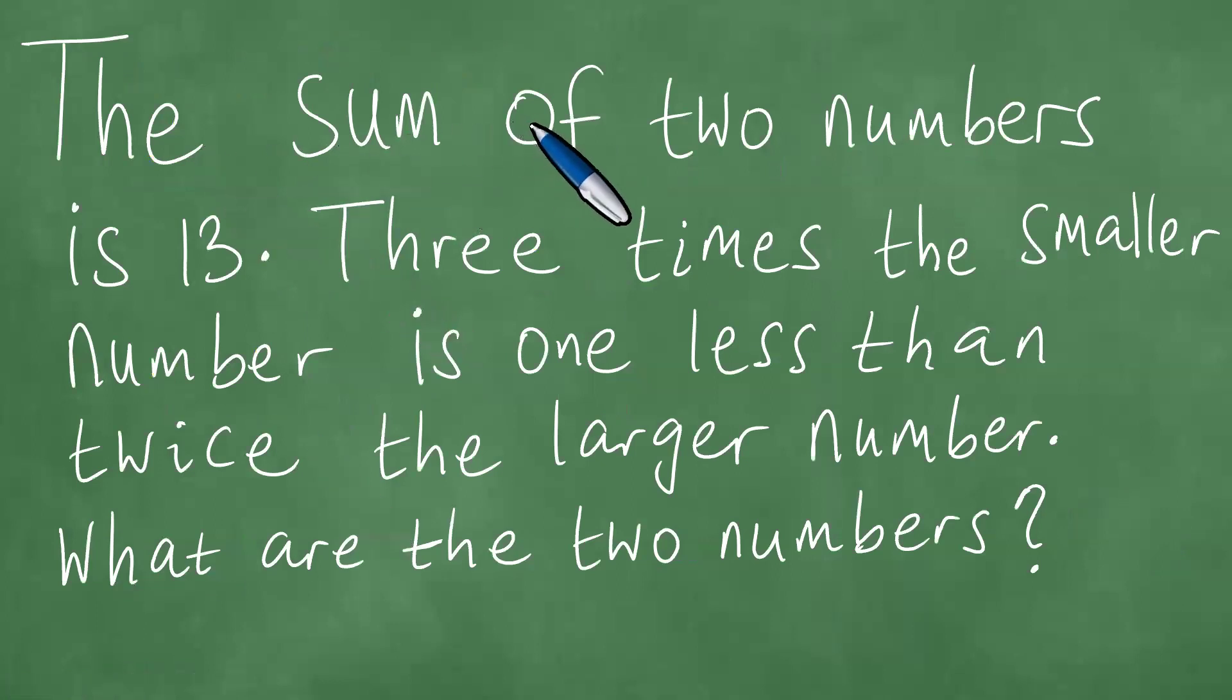So the sum of two numbers is 13. We're seeing that. Now three times the smaller number is one less than twice the larger number. Let's analyze that. We know that we have the smaller number x and y is the larger number. And we're saying three times the smaller number is one less when compared to twice the larger number.